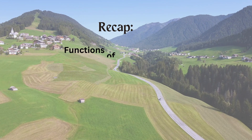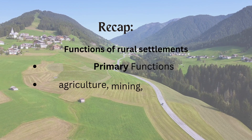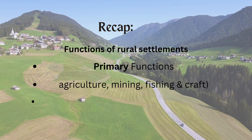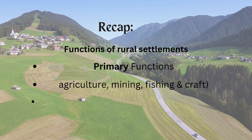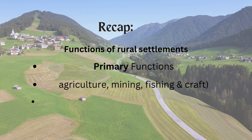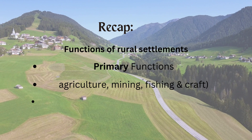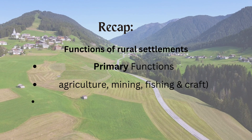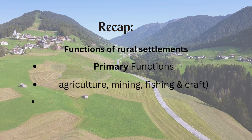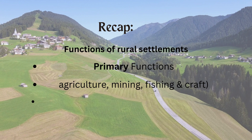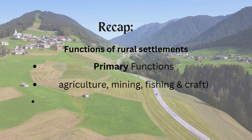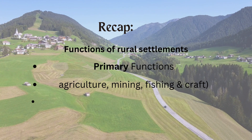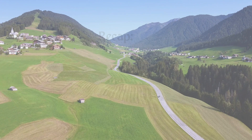We also talked about functions of rural settlements. There are two types of functions: primary and commercial. In the primary function, people do activities like agriculture, mining, fishing, and craft work.